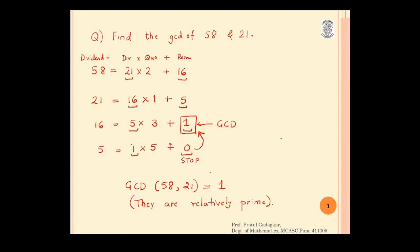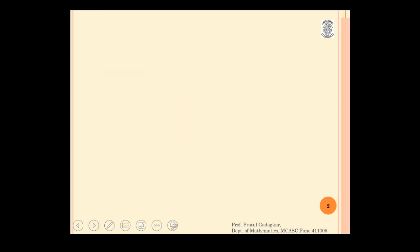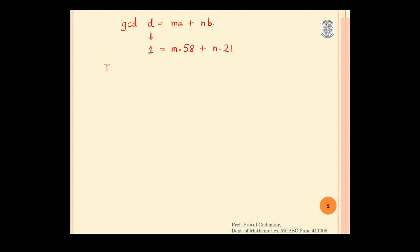Now we will go to the next section of this problem. We will write down the GCD, which is D, as M times A plus N times B — we will write GCD in this format. In this problem our GCD is 1, so we want to find M and N such that 58·M plus 21·N equals 1.